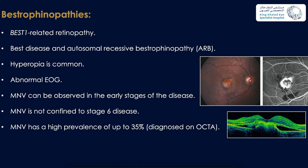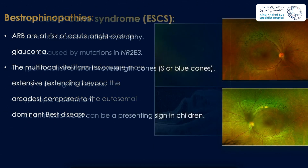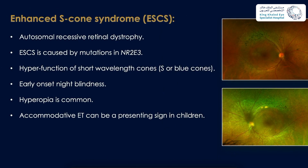Bestrophinopathies include Best disease and autosomal recessive bestrophinopathy, or ARB. They usually have hyperopia and abnormal EOG. Macular neovascularization can be observed in early stages of the disease — it is not confined to stage 6 — and has a high prevalence of up to 35% based on OCTA diagnosis. Autosomal recessive bestrophinopathy patients are at increased risk of acute angle-closure glaucoma and have multifocal vitelliform lesions more extensive than autosomal dominant disease.